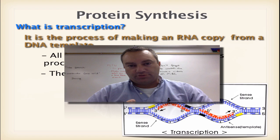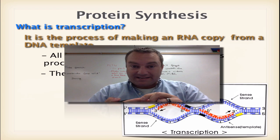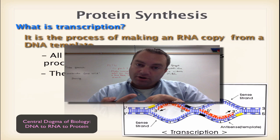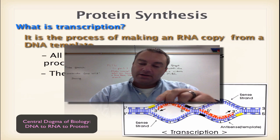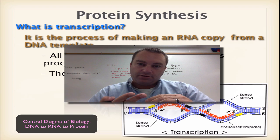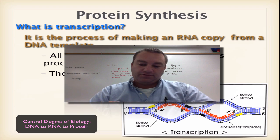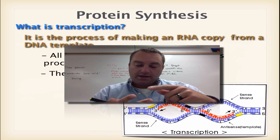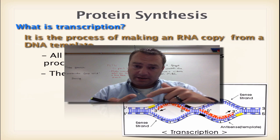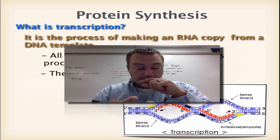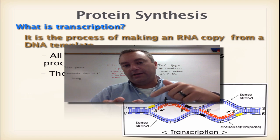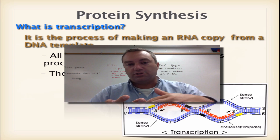The central dogma of biology is: you start with DNA, the DNA is transcribed into RNA, and the RNA is transcribed into a protein. So you go from DNA to RNA, RNA to protein. To go from DNA to RNA is called transcription, and to go from RNA to protein is called translation.